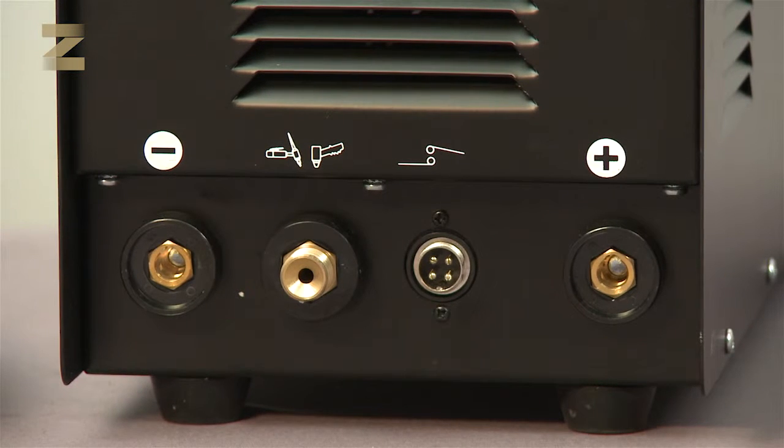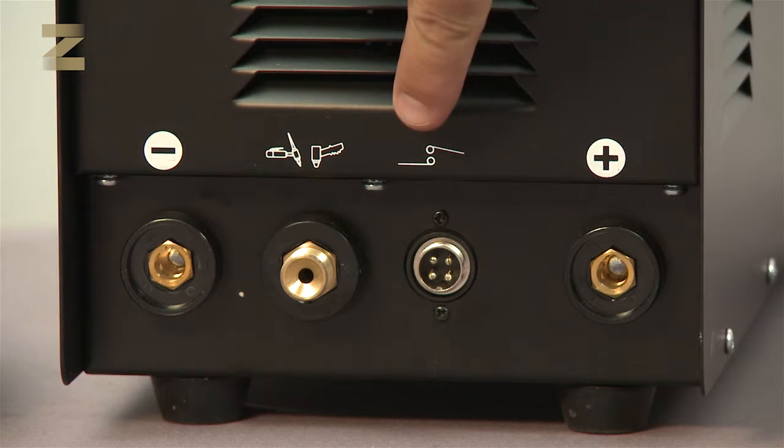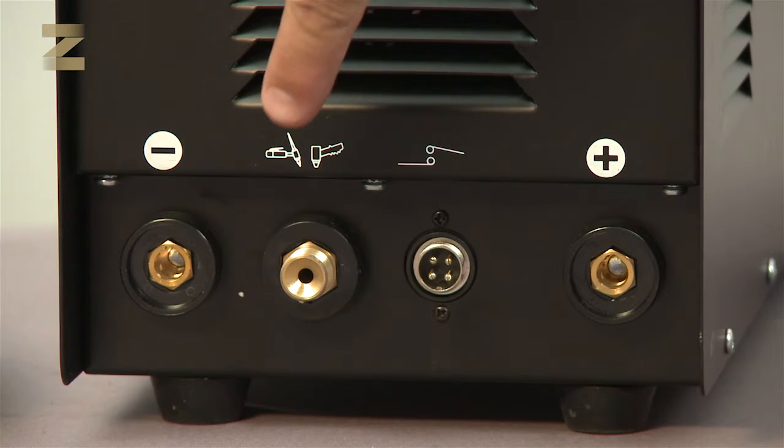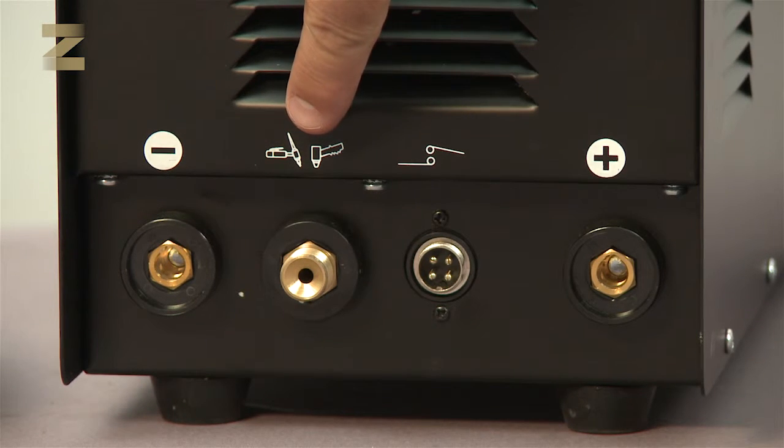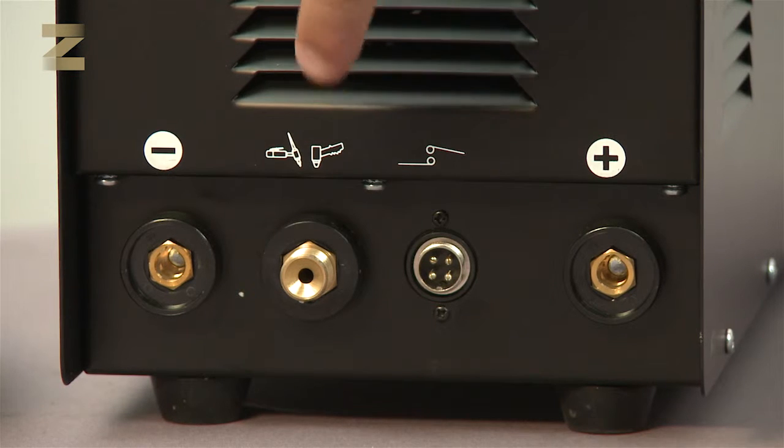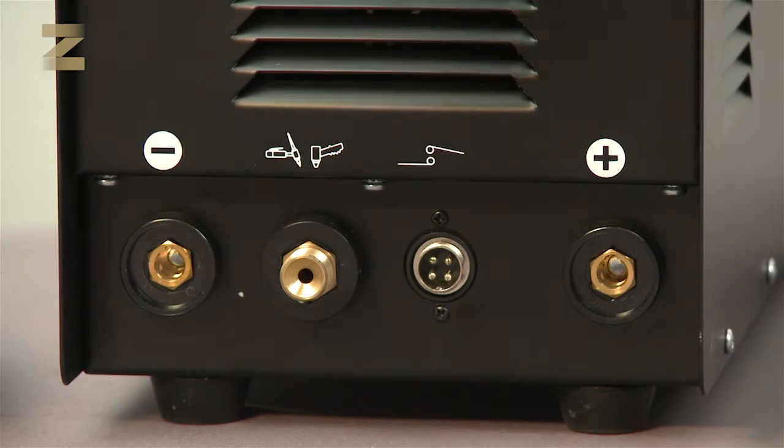The following connections are found at the bottom of the machine: the positive connector, an electric socket to connect the TIG handle or plasma handle, a gas connection for argon gas handle or air pressure connection for the plasma handle, and a negative connector.